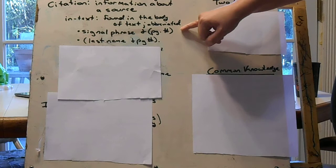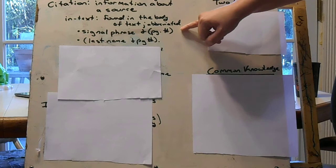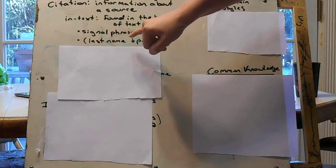We have two kinds of citations. We have a signal phrase plus the page number. The page number goes in parentheses at the end. The signal phrase just basically says who you got it from.